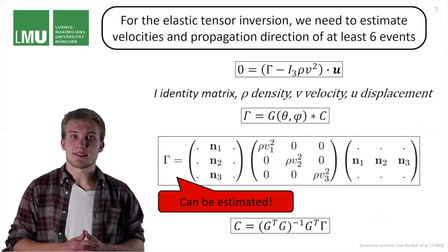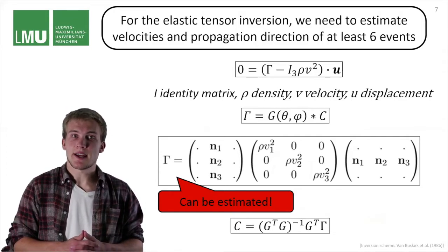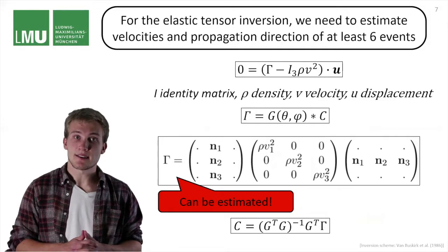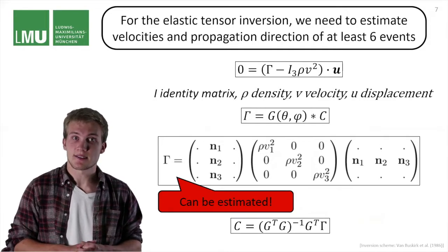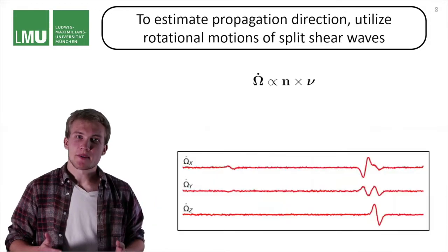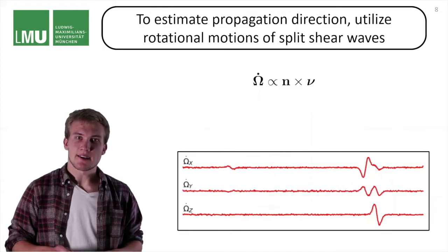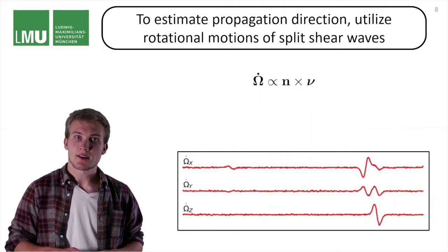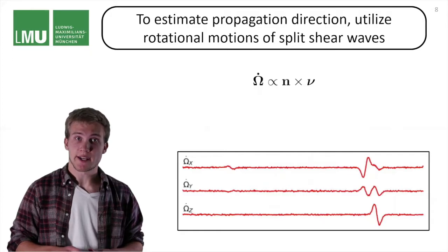Now let's go ahead and take a look at how we can estimate the propagation direction and the velocities at the 6C receiver. To get the propagation direction, we need to understand that rotations are always perpendicular to the propagation direction.